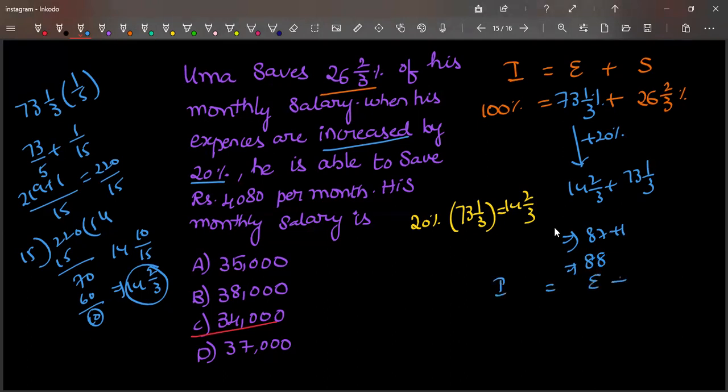Now, his expenditure is 88, and his income is 100 percent, expenditure is 88 percent. The remaining 12 percent will be his new savings.